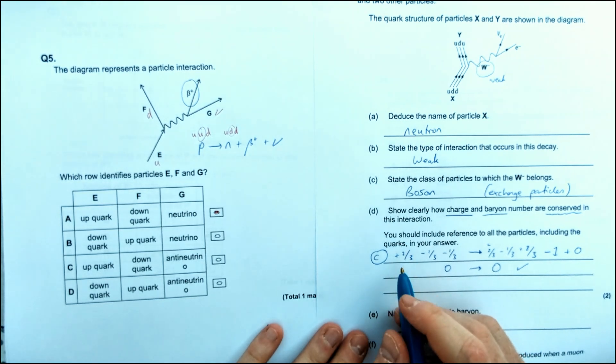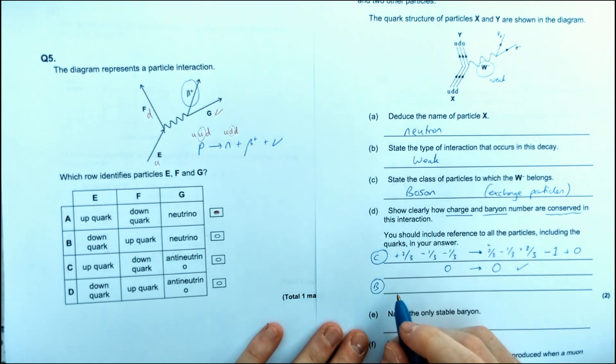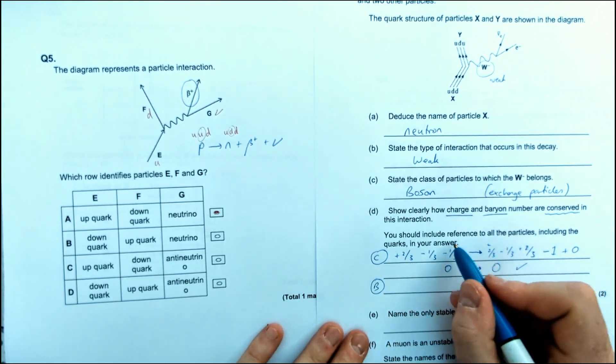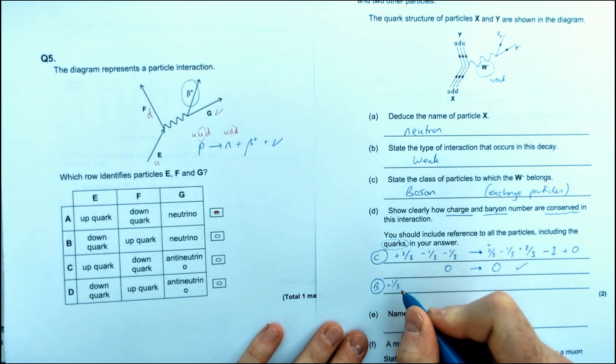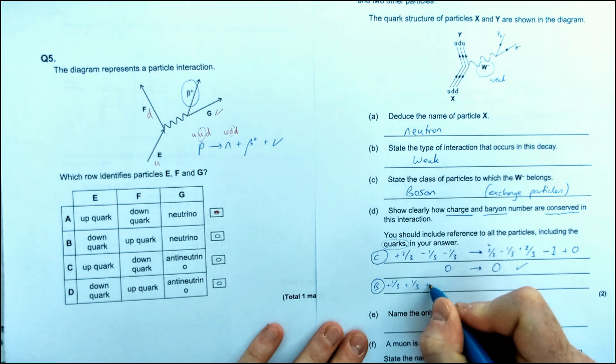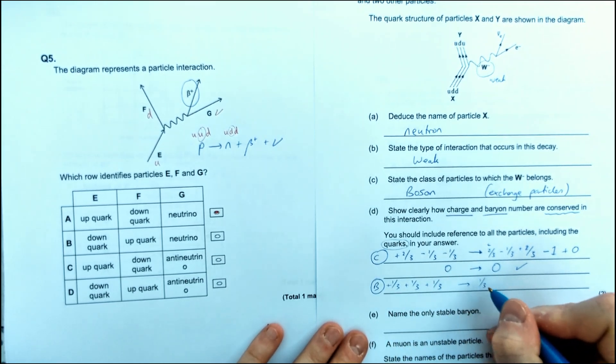So we're going to look at the next one here, baryon number. So I'm just going to do a B for baryon number. You could write it out in full. So it says reference all quarks. So, you know, it's a bit of a pain we've got to reference everything in here. So I've got plus a third. So these are all just regular baryons because they're not antibaryons. Third, third, third makes.